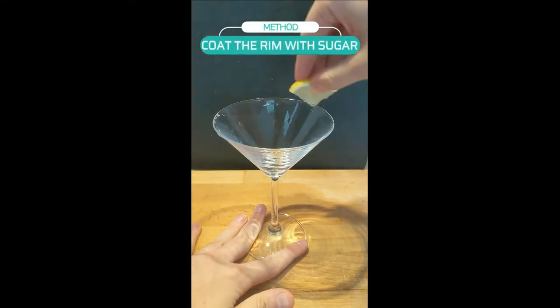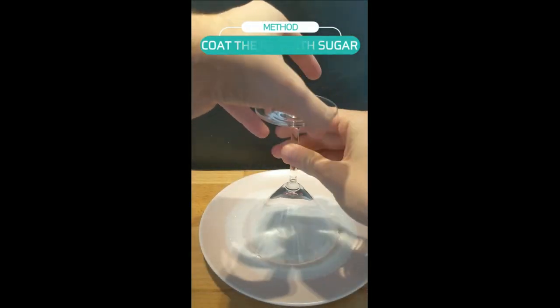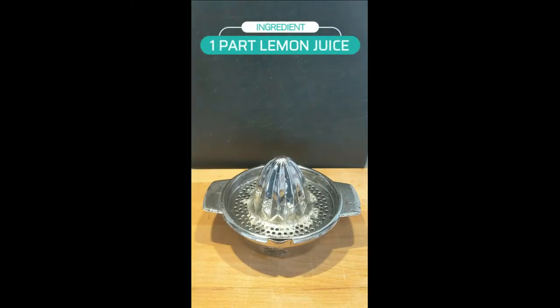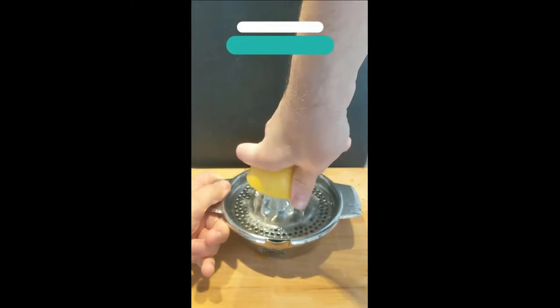Let's start off by coating the rim of the glass in sugar, and then setting it aside as we get our rest of our drink ready. Let's move on to juice up one lemon to get roughly one part lemon juice, and then setting it aside.